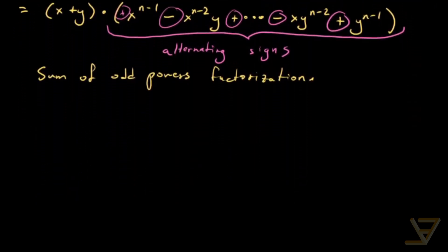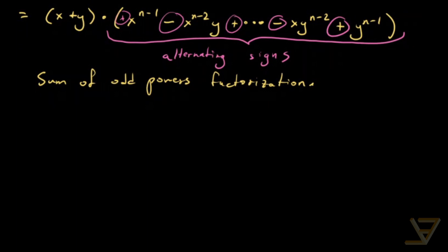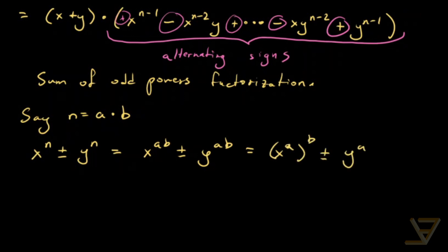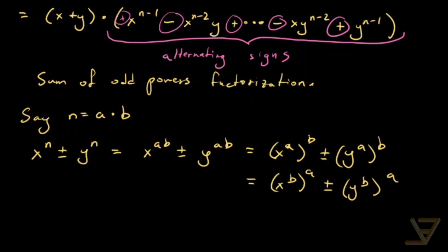The last thing I want to mention is that it's possible to get a partial result in the case of even exponents. Because if n is equal to a times b, then you can write x to the n plus or minus y to the n as x to the a to the power of b plus or minus y to the a to the power of b, which is also equal to x to the b plus or minus y to the b to the power of a. So we can write it as a sum or difference of powers of b or a, as long as they are factors of n.